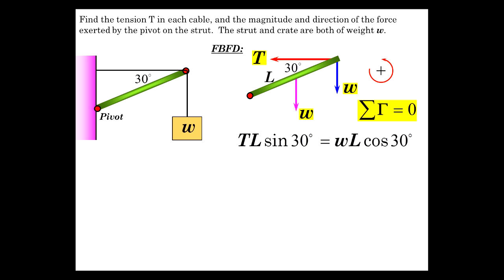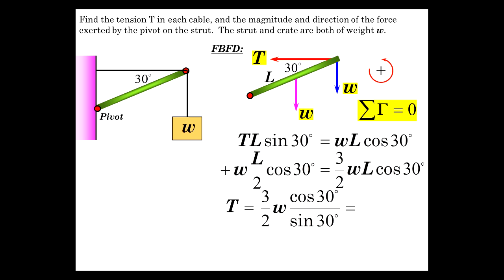So that's W on the end times this distance, which is WL cosine of 30, plus WL over 2 cosine of 30 for the weight from the center of gravity. That's 3 halves WL cosine of 30. We can solve for tension and divide by L sine of 30. The L's go away. We have 3 halves W cosine 30 over sine 30 gives us 2.6W. So in terms of W, that's the tension in that cable.